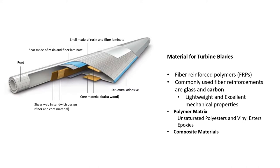During the first pioneering years of wind energy, there was extensive usage of wood, steel, aluminum and other materials. In recent years, there is a predominance in the use of composite materials for the blades. Nowadays, the popular materials for turbine blades are fiber reinforced polymers, or FRPs. The commonly used fiber reinforcements are glass and carbon, because these are lightweight and possess excellent mechanical properties. Polymer matrices such as unsaturated polyesters, vinyl esters and epoxies are also used.